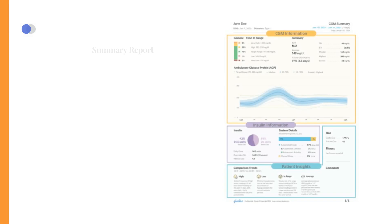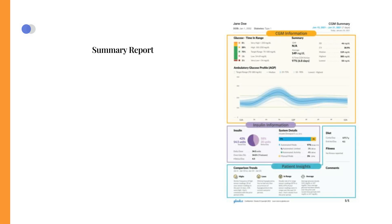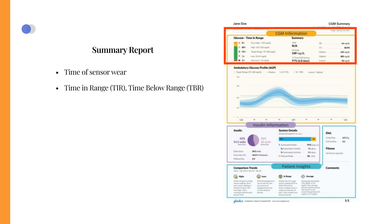Generally, there are three main types of reports to consider. First, the summary report, which provides an overview of glucose and insulin metrics. Important glucose sensor metrics include time of sensor wear, time in range, time below range, estimated HbA1c, and glycemic variation.